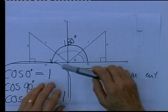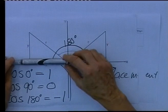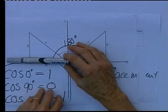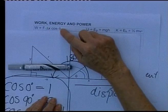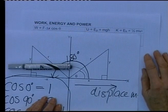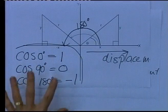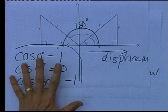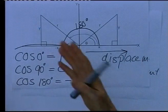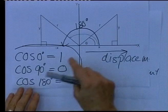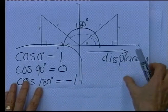If you work with a frictional force acting in the opposite direction, it will produce negative work because cos theta will be minus 1. This is extremely important — we must know these three values: cos 0 equals 1, cos 90 equals 0, and cos 180 degrees equals minus 1.